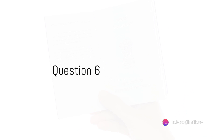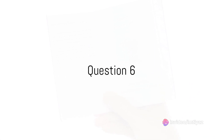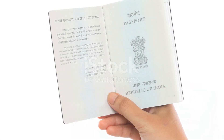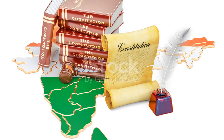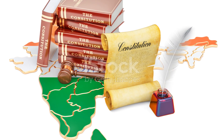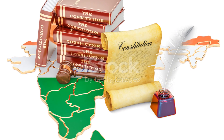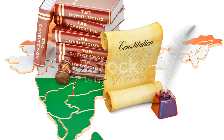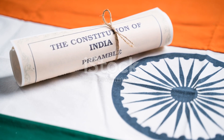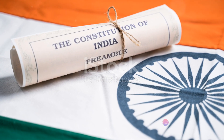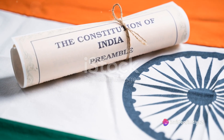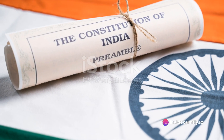Halfway through with Question 6. Which article of the Indian Constitution deals with citizenship? A. Article 5, B. Article 6, C. Article 7, or D. Article 8? The answer is A. Article 5.